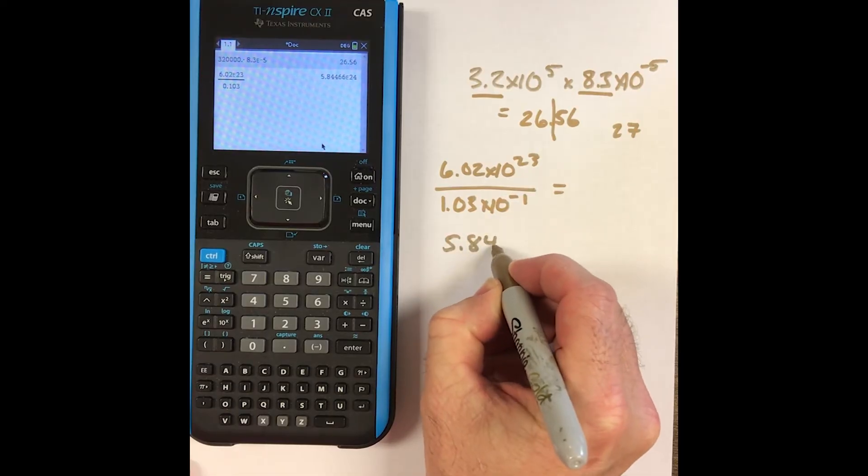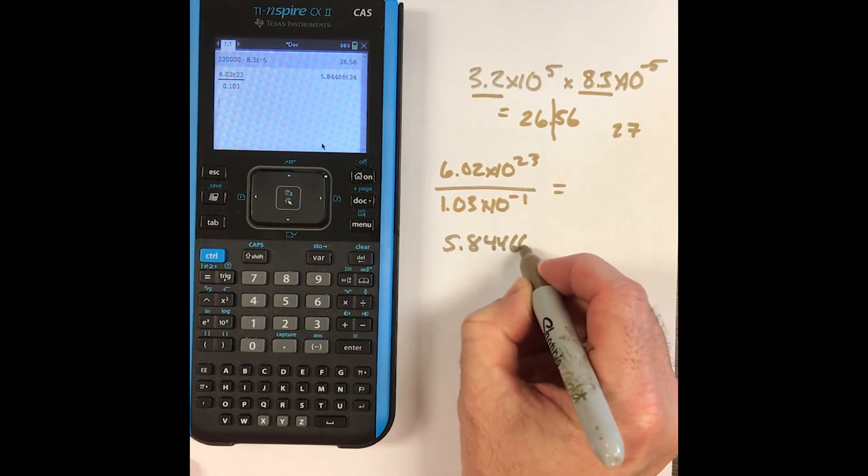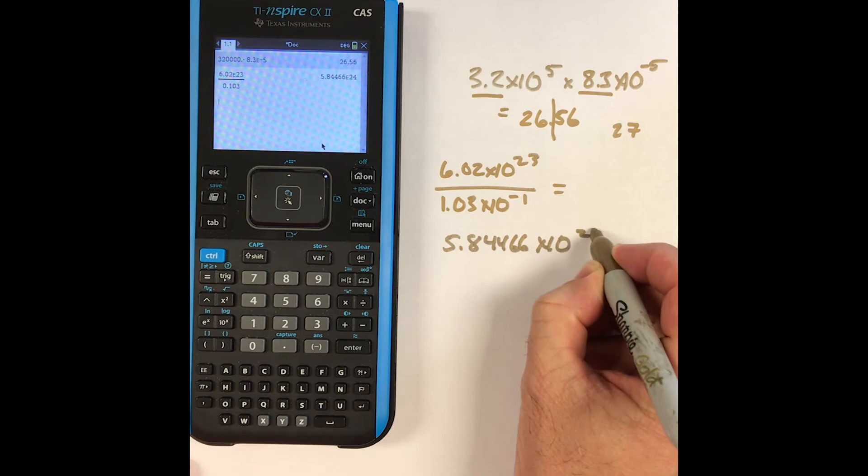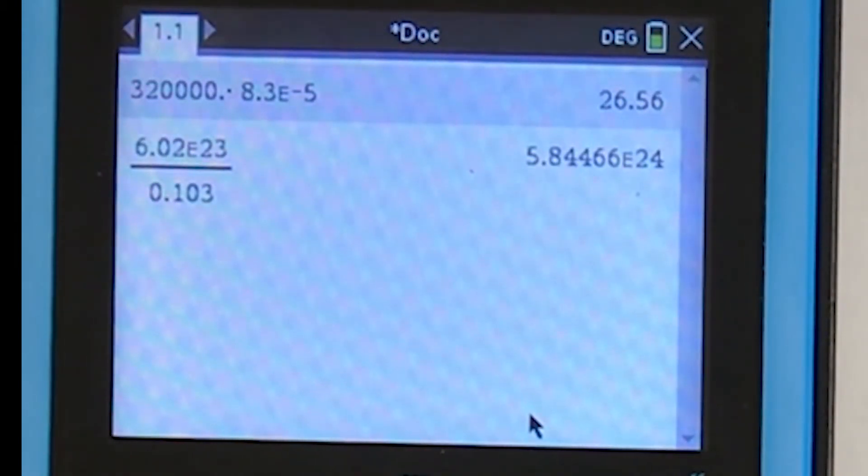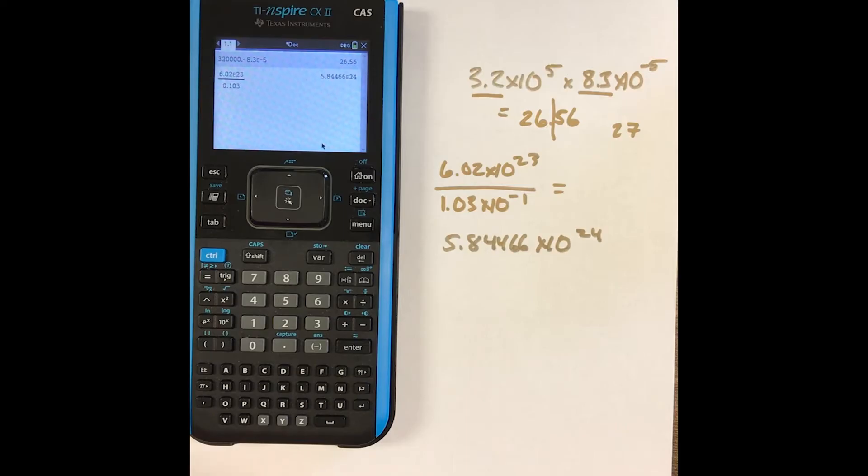5.84466 times 10 to the 24th. Now, it says E24, and so I quickly realized that E means times 10 to the power.